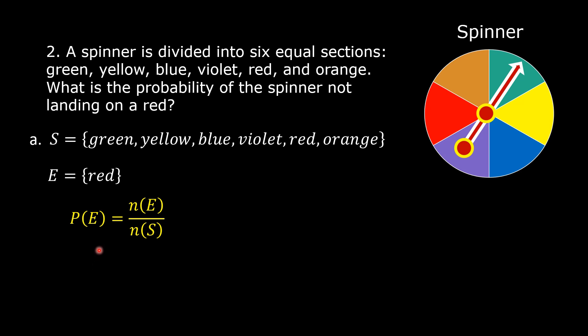The probability of an event is equal to the number of outcomes in the event over the number of all the outcomes in the sample space. The number of outcomes in the event is 1, and the number of outcomes in the sample space is 6. So replace N of E by 1 and N of S by 6. This is equal to 1 over 6. So the probability of the spinner landing on red is 1 over 6.